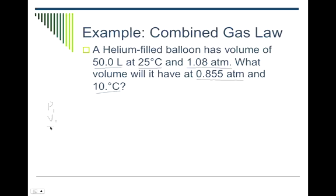P1, V1, T1, P2, V2, T2. So my first pressure was 1.08 atm, my starting pressure. My starting volume was 50 liters. My starting temperature was 25 degrees Celsius. Again, we can't use Celsius. We have to use Kelvin. So 25 degrees Celsius is 298 Kelvin. Second pressure was the 0.855 atmospheres. Second volume, it says what volume will it have, so that's X. My second temperature is 10 degrees Celsius, so that is 283 Kelvin.